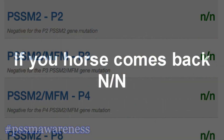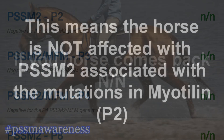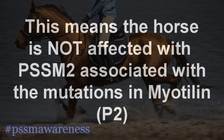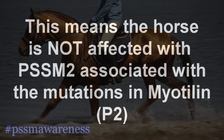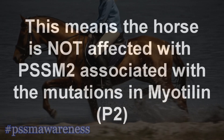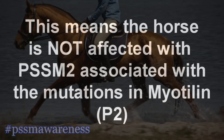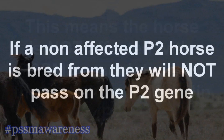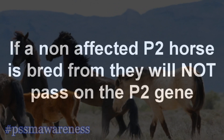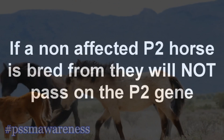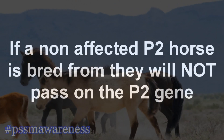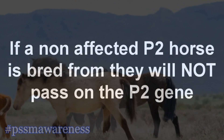If your horse comes back N/N, this means the horse is not affected with PSSM2 associated with the mutations in myotillin, P2. If a non-affected P2 horse is bred from, they will not pass on the P2 gene.